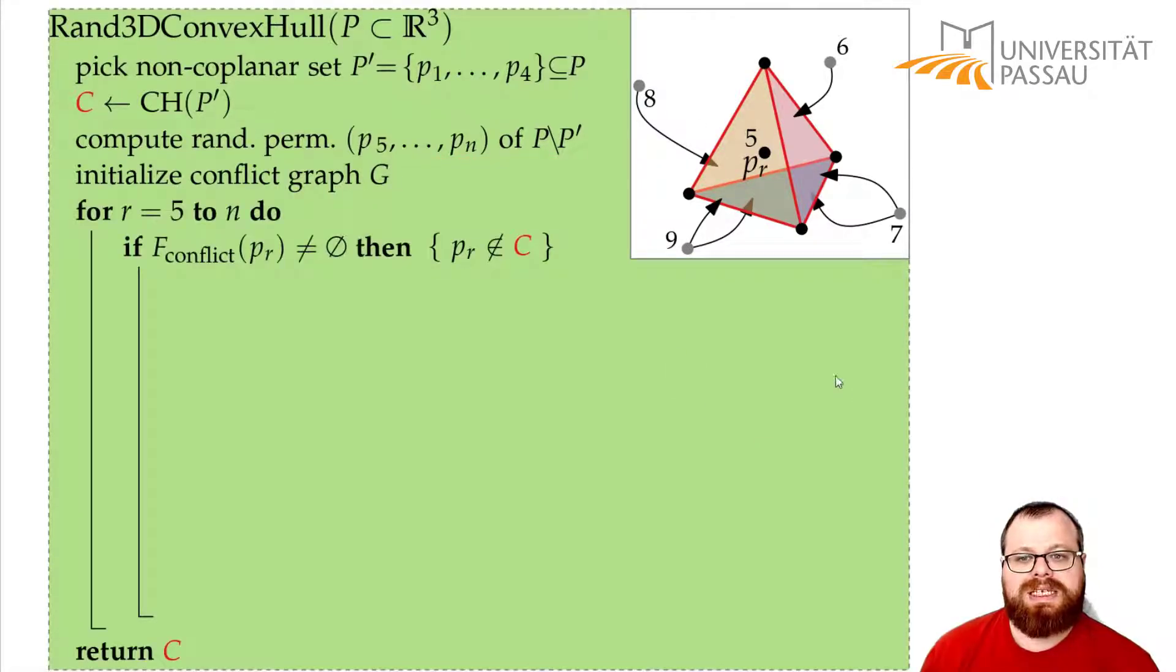So let's pick the next point. This point could already lie in the convex hull. If it does, like number 5 here, then we don't even have to do anything, because the convex hull doesn't change.